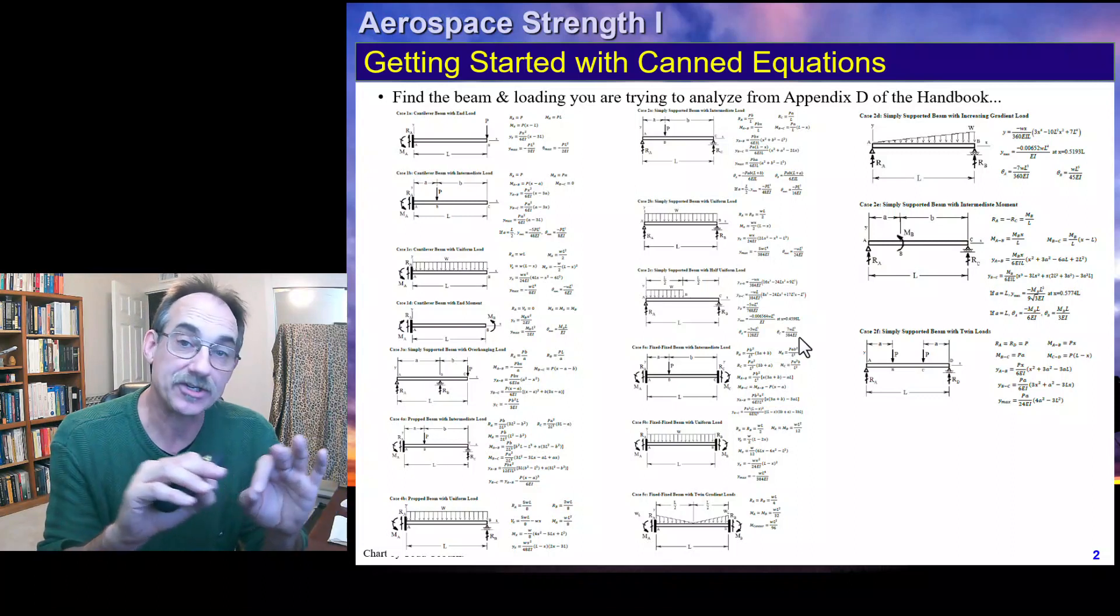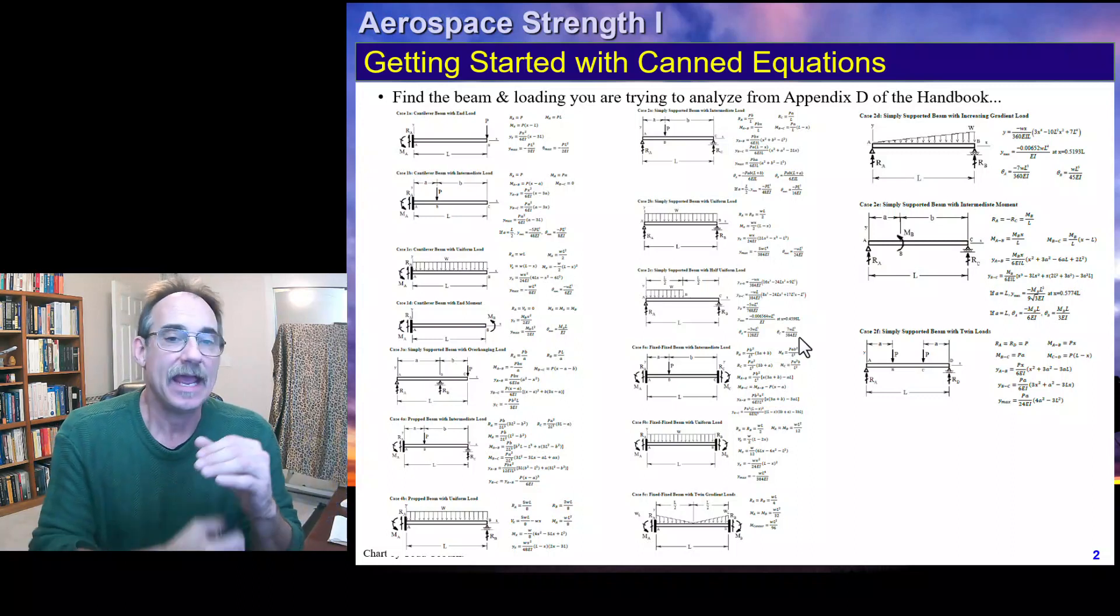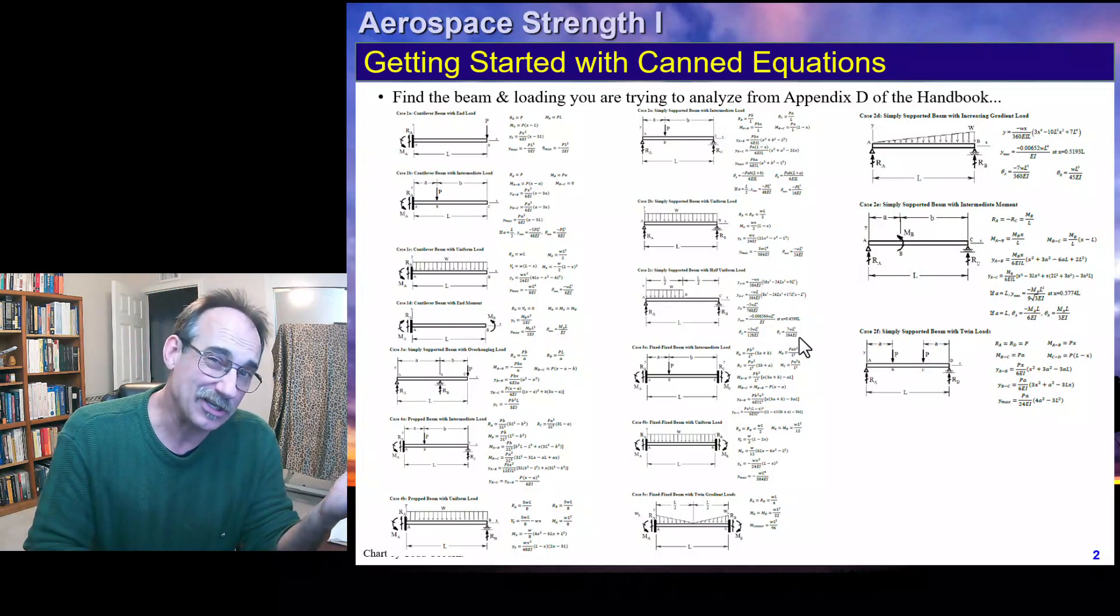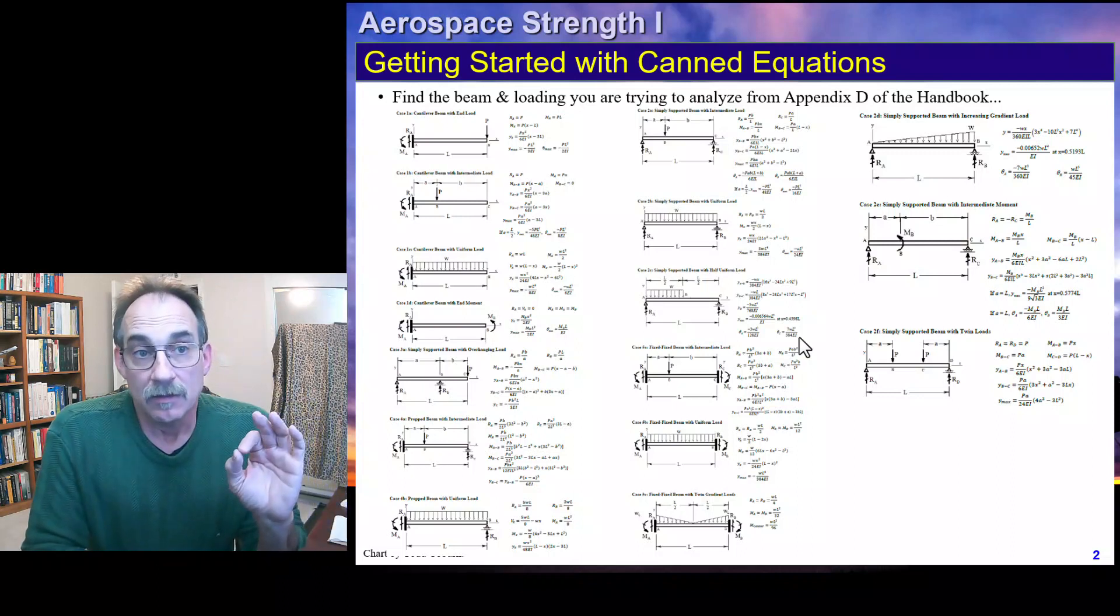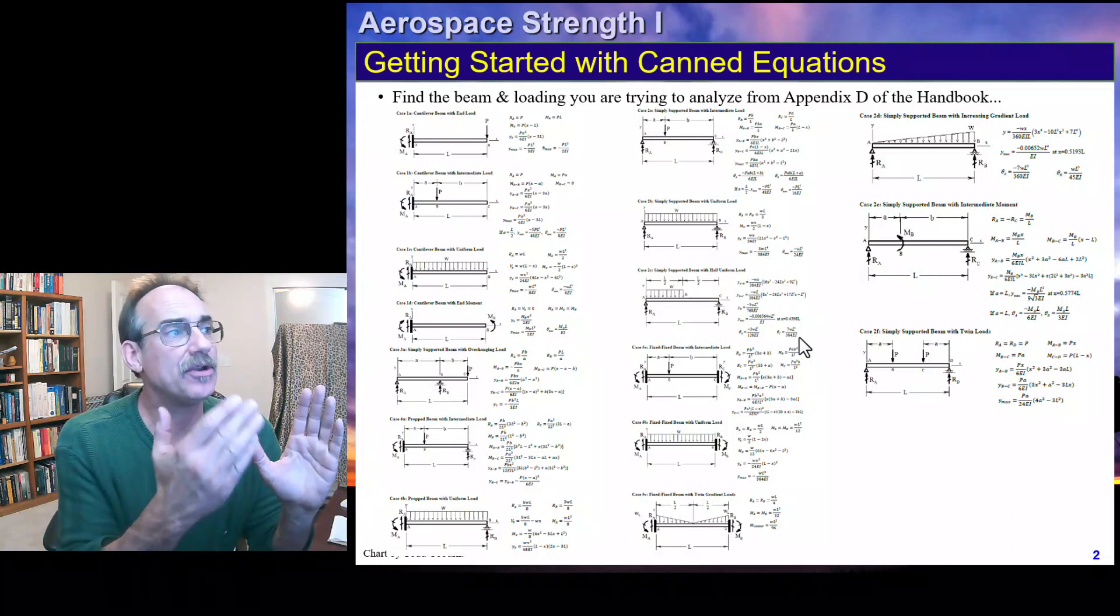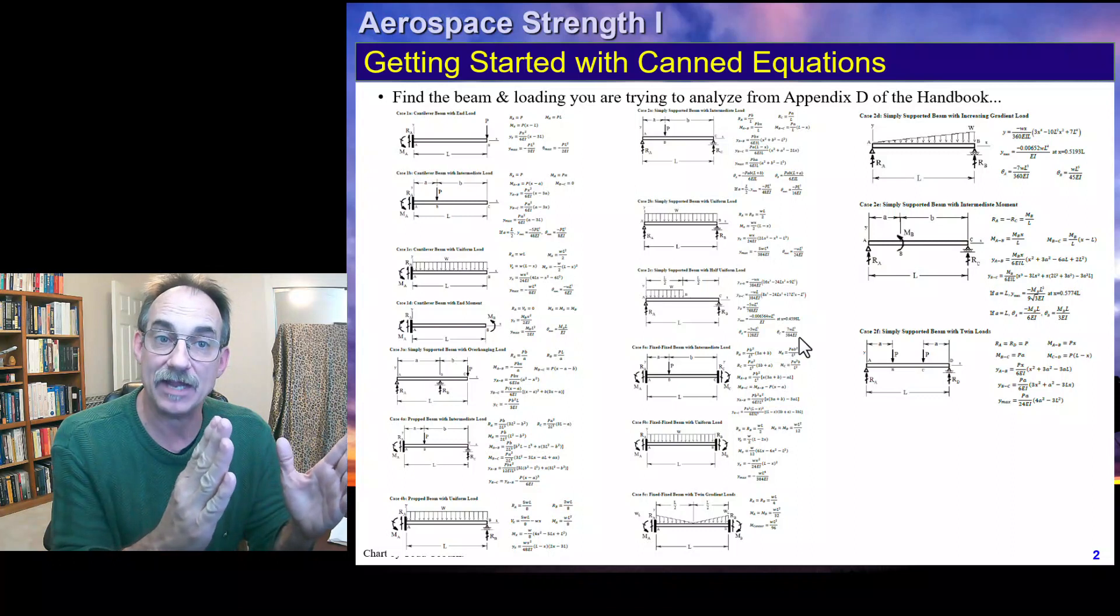The general classes of beams will include a cantilever beam like the first few choices we see here, a pinned-pinned beam which you see some choices here, propped beams where you have a fixity on one end and a pin on the other end, and you have overhanging beams where you have pins or constraints of fully clamped and pinned constraints along the beam. So here you see different choices, and the first thing we're looking at is the constraints. Do they perfectly match?